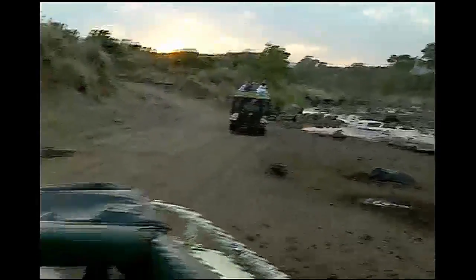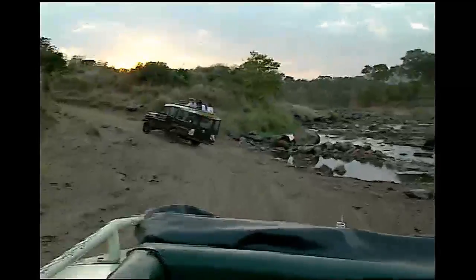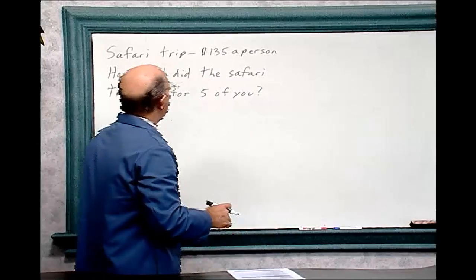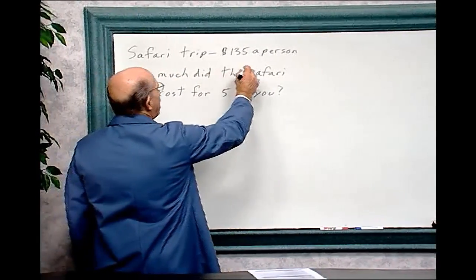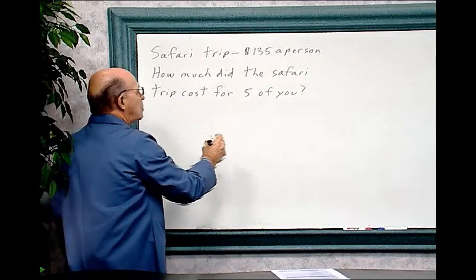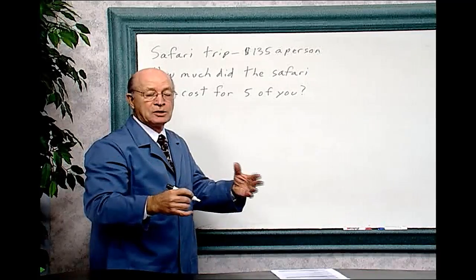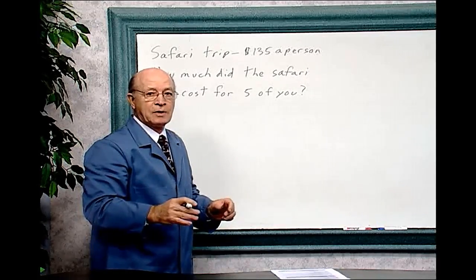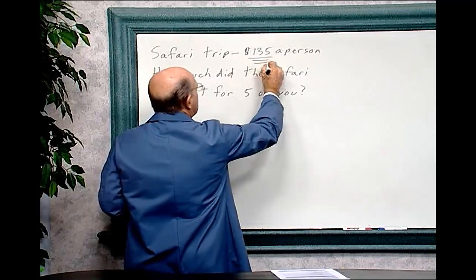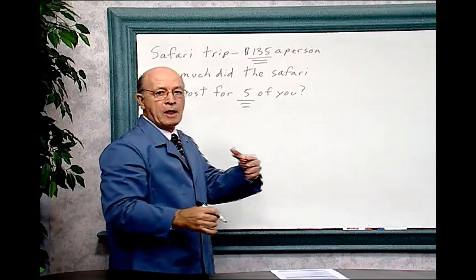If this safari trip costs $135 per person, how much did it cost for the five of you? Let's do the math. The safari trip costs $135 a person. The question is, how much did the safari trip cost for five of you? That is a beautiful trip, to go and see all those wild animals. So it costs $135 for each individual, and five people went on this trip.